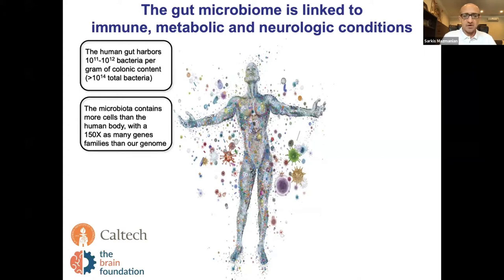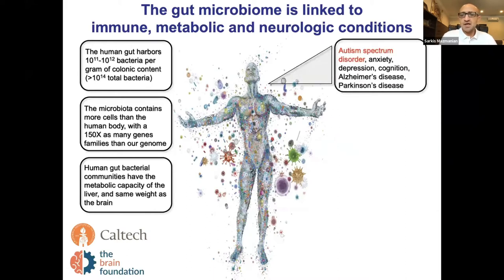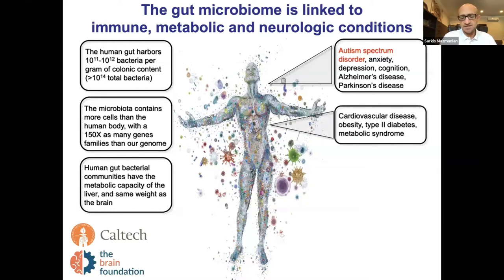Some have speculated our microbiome to be our second genome that networks with our human genome to mediate processes of health and disease. Quite interestingly, the microbiome has a metabolic capacity of the human liver and roughly the same weight as the adult brain. In animal models — and of course more work is being done in humans — we now know that gut bacteria impact a variety of neurological conditions, including autism, classical anxiety, depression, and neurodegenerative conditions such as Alzheimer's and Parkinson's disease.